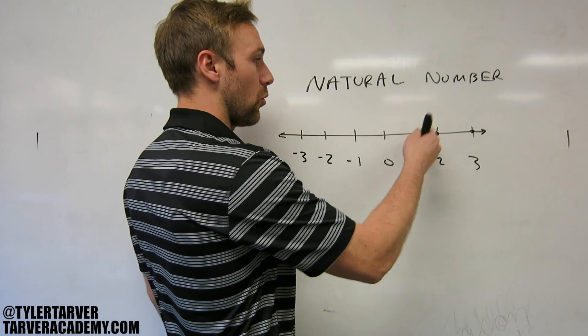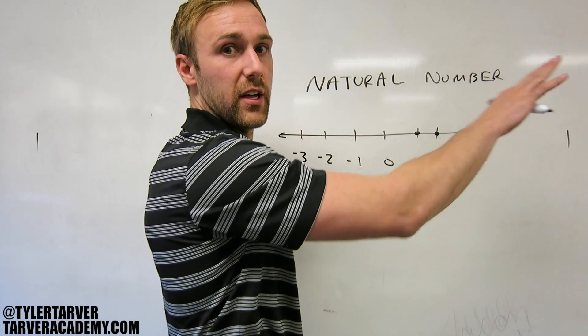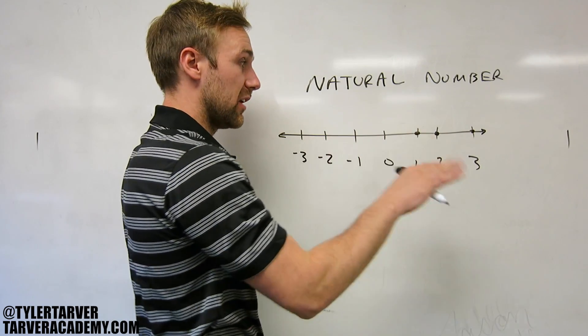You know a natural number is anything 1, 2, 3, 4, all the way up that is a solid number and above zero.